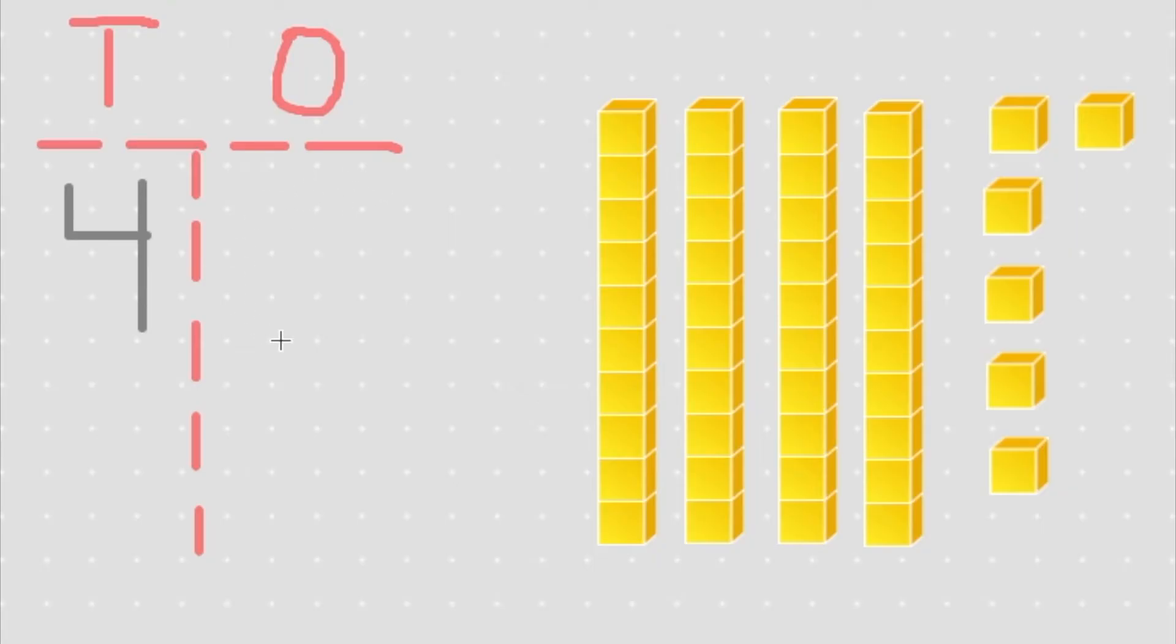To figure out what number goes into the ones place we need to see how many cubes we have, because a cube is worth one. We have one, two, three, four, five, six. So we can put a six in the ones place and just like we counted this shows the number 46. The number 46 has four tens and six ones. Here's another example.